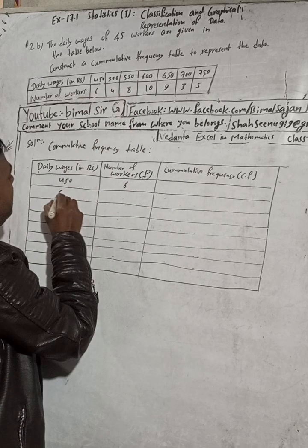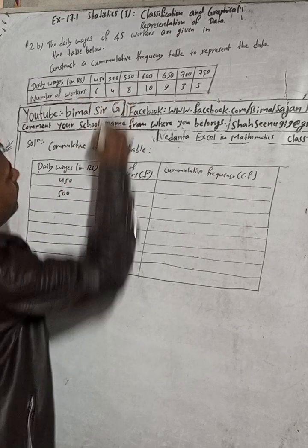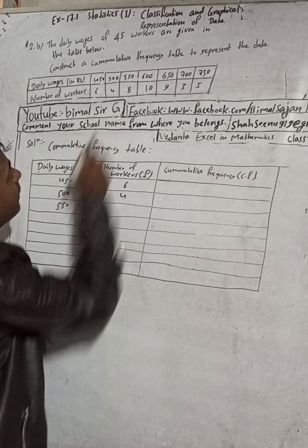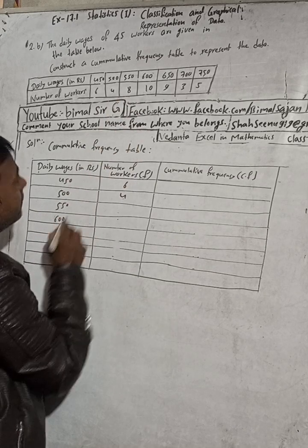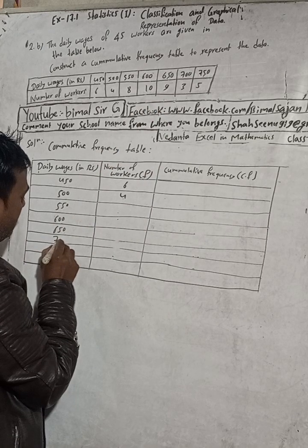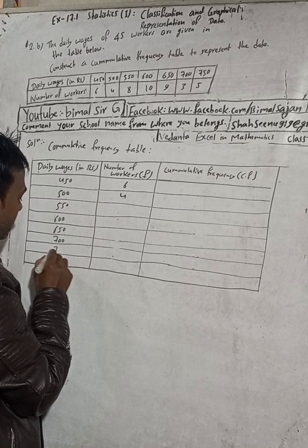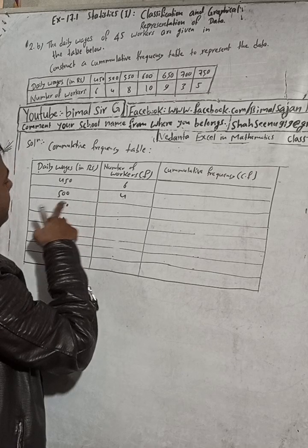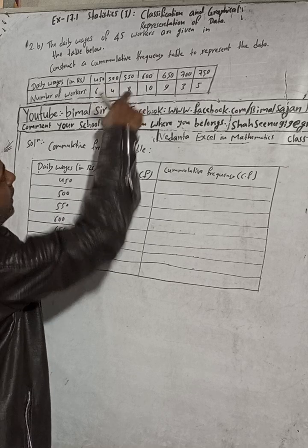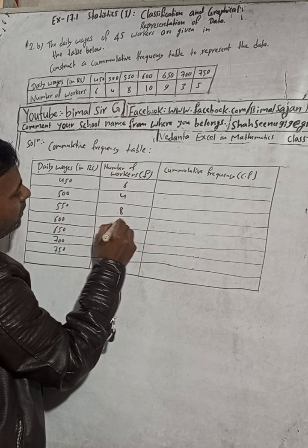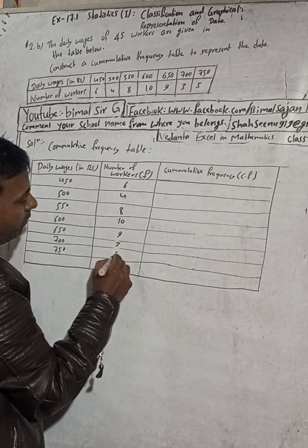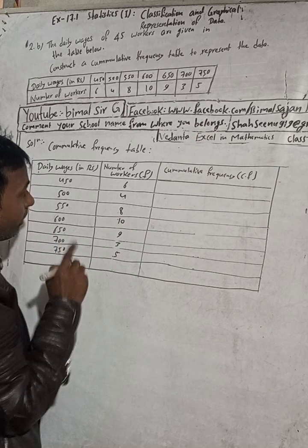The wages are 450, 500, 550, 600, 650, 700, and 750 — each increasing by 50 rupees. The corresponding number of workers are: 6, 4, 8, 8, 10, 9, 3, and 5.